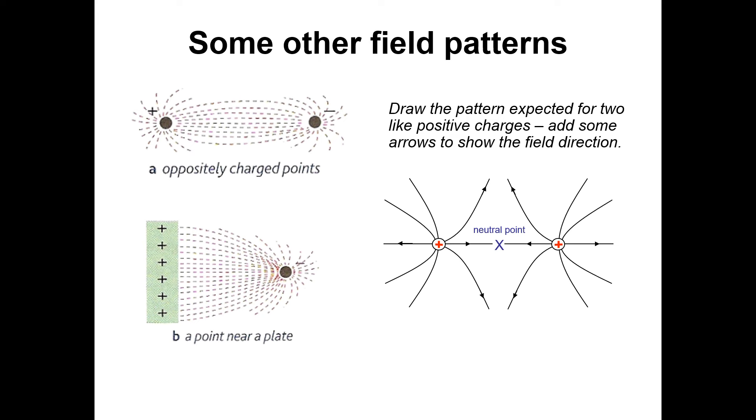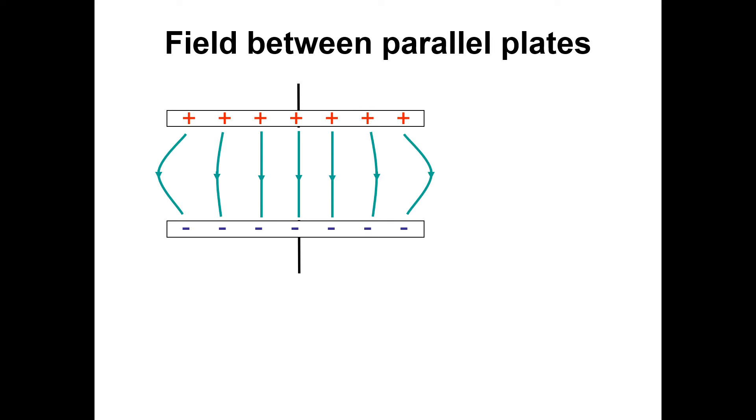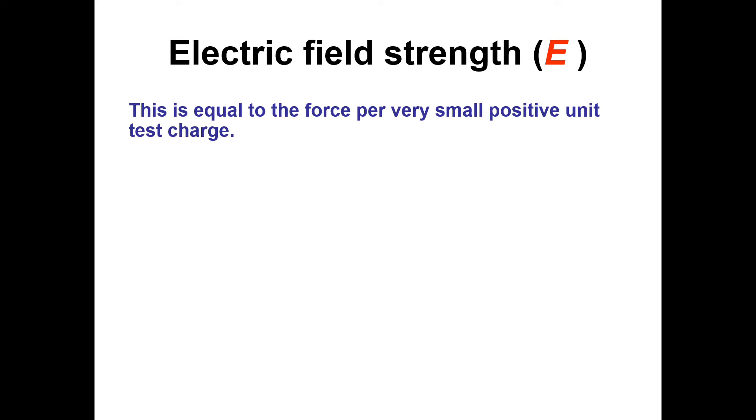With this topic, the field line direction is really important to get correct. This kind of leads on to capacitors really. But the field lines between parallel plates, in reality, they would look a bit like that with some bowing there on the edge of the plates. But most problems consider the field to be uniform between the plates. Maybe it's better to show just straight lines, because that's what comes up in the vast majority of questions.